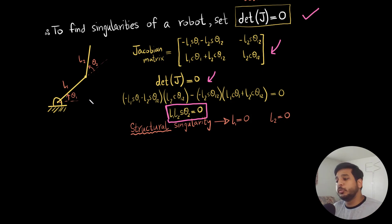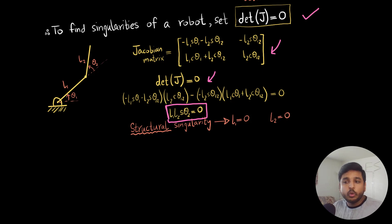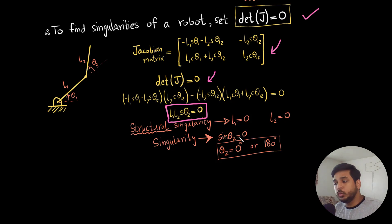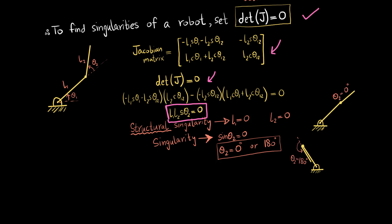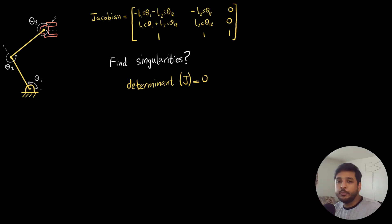A single rod rotating in a circle always has its tip velocity perpendicular to the rod, so it loses its ability to move in certain directions — it is at a singularity. In robotics we are more concerned with the specific configuration singularities. Setting sin(theta_2) = 0 gives theta_2 = 0 or 180 degrees. At theta_2 = 0, the robot can only move in two opposite directions; at theta_2 = 180, similarly it can only move in two directions.